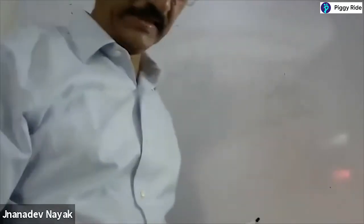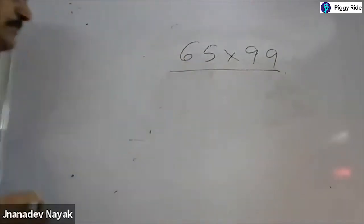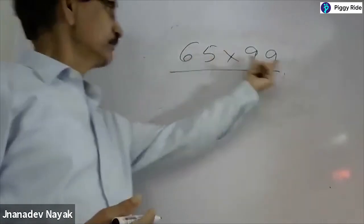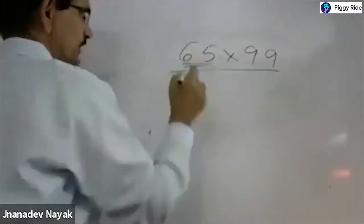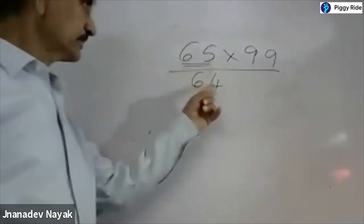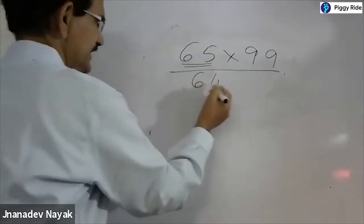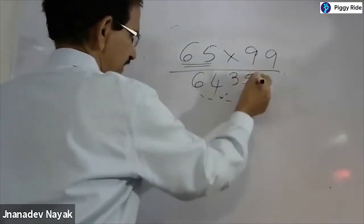Now multiplying any number by a series of nines. You have learned multiplying by a series of ones; now I will show you how to multiply by a series of nines. For example, 65 into 99. In this method, you should have equal digits on both sides — here two digits and here two digits. Whatever the number, just reduce one: 65 minus 1 equals 64. Then subtract each digit individually from 9: 9 minus 6 is 3, 9 minus 4 is 5. So the answer is 6435.